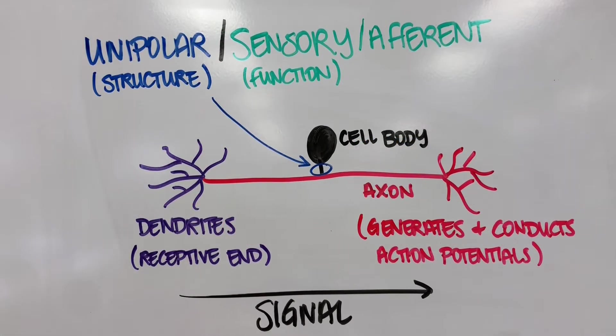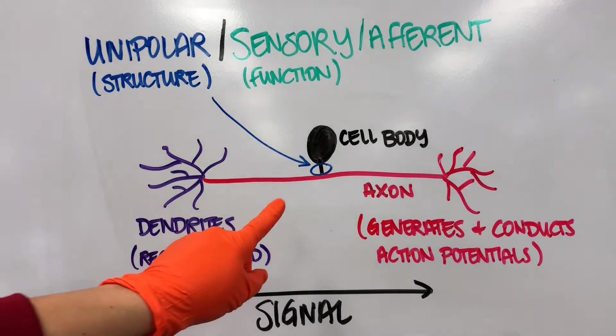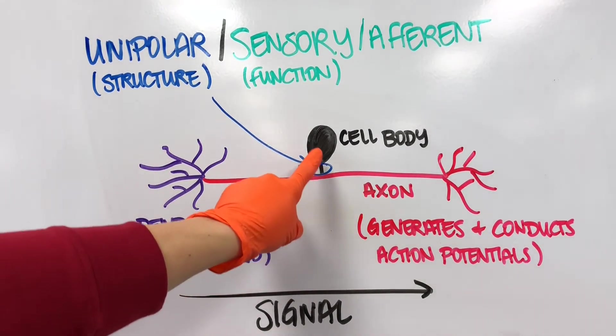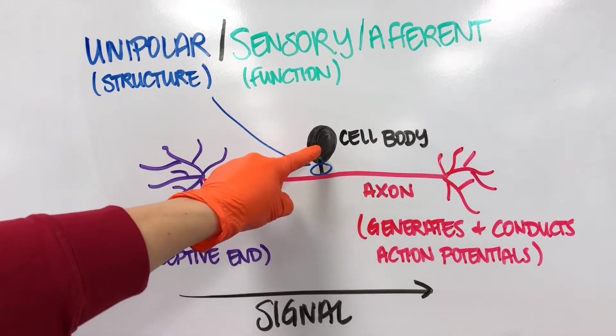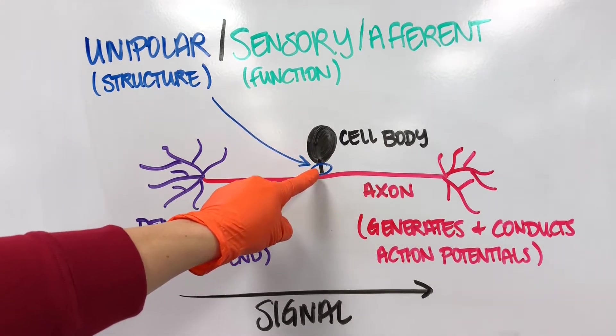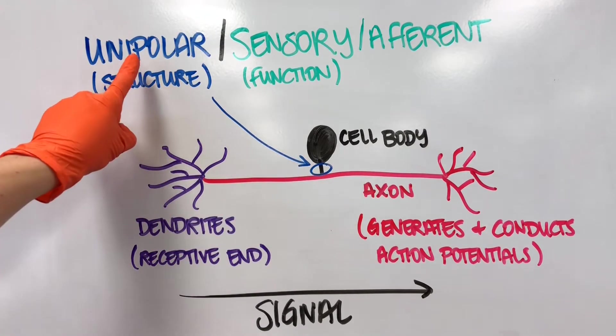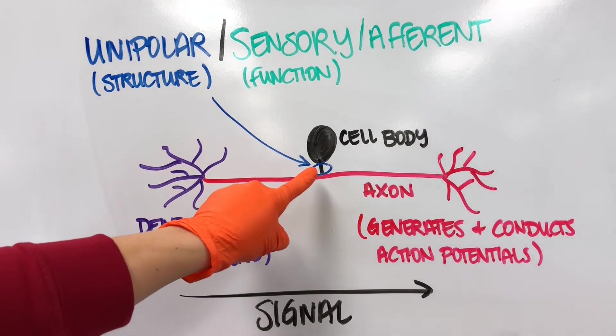This is the first type of neuron I'd like to talk about: a unipolar neuron. We call it unipolar because we always start with the cell body and see how many processes come off of that. Here we only have one, therefore we call this a unipolar neuron.